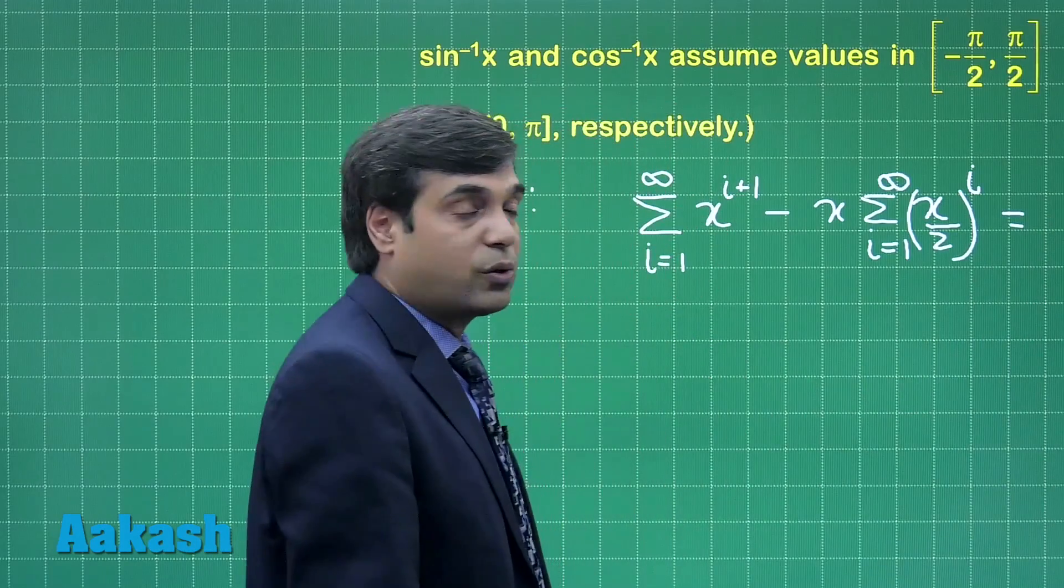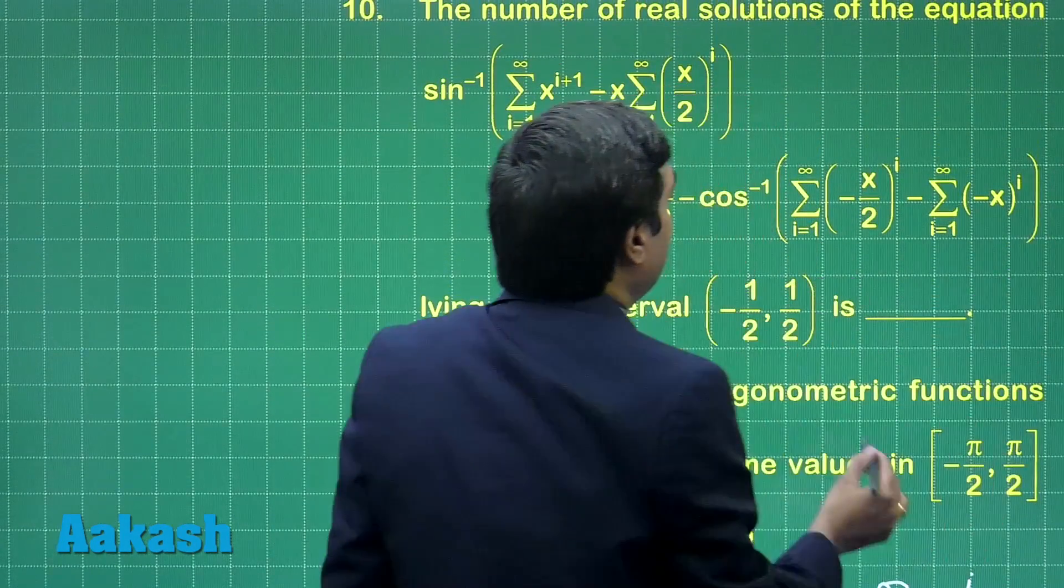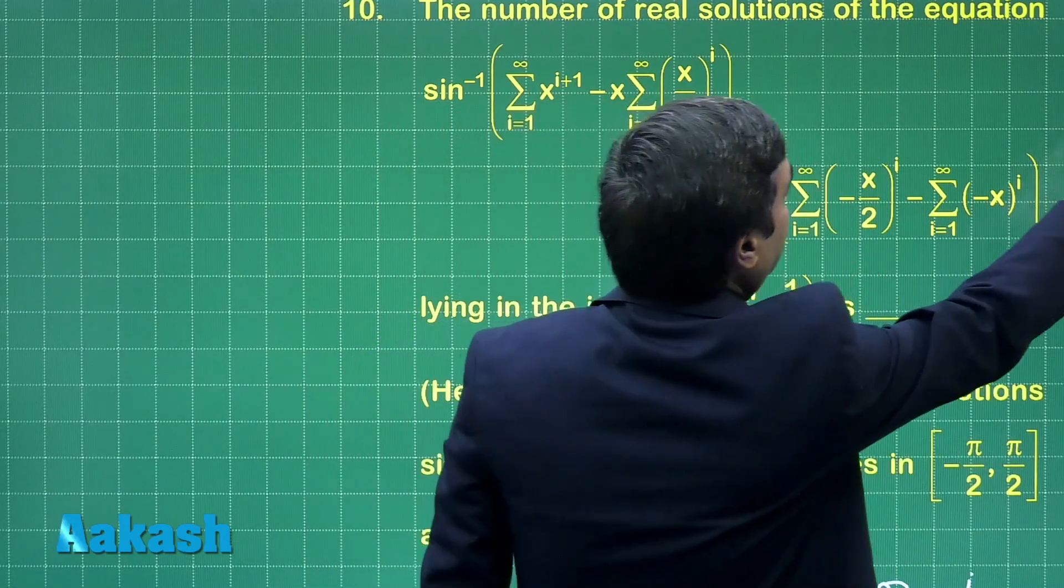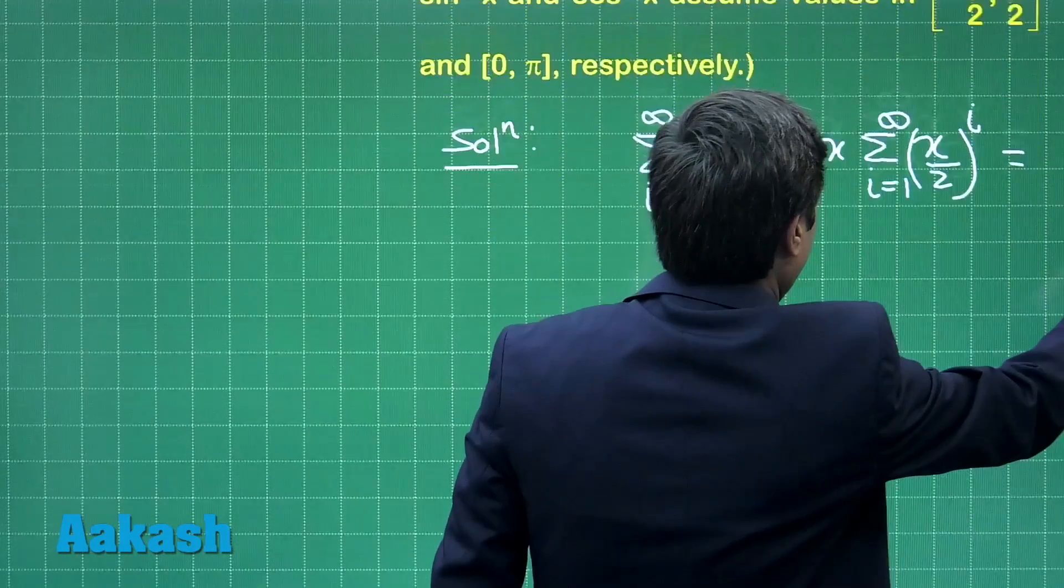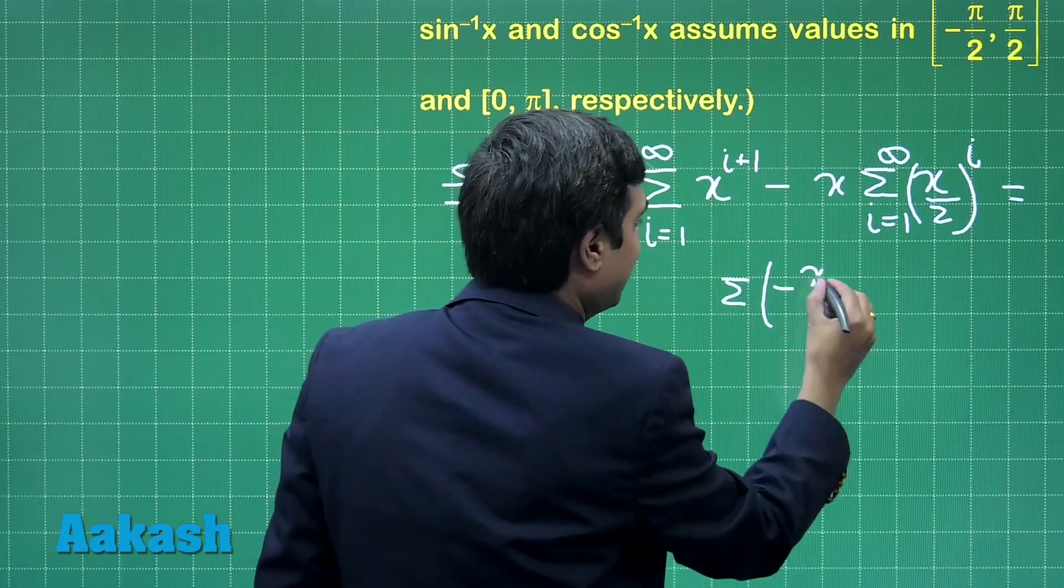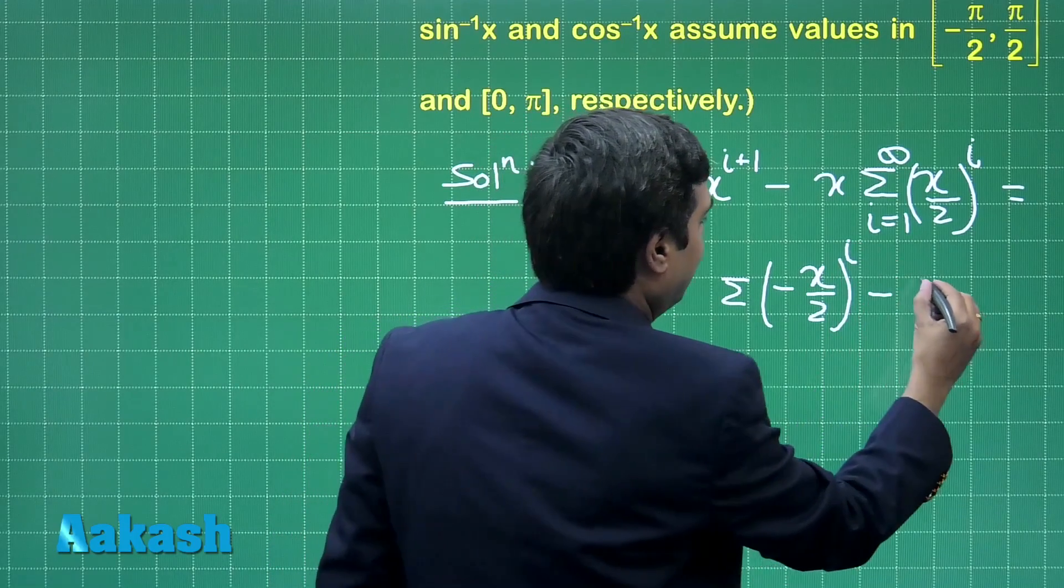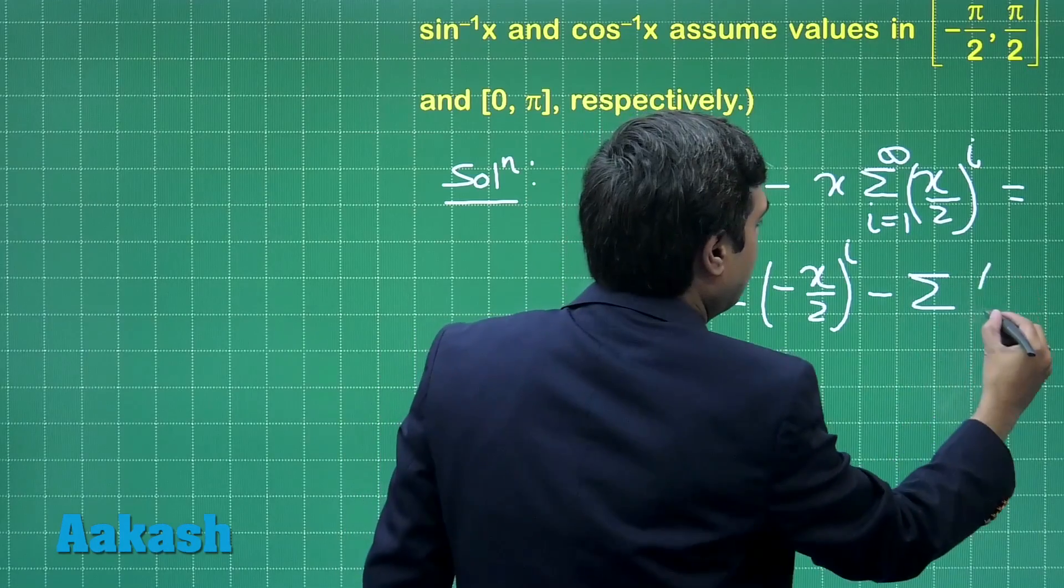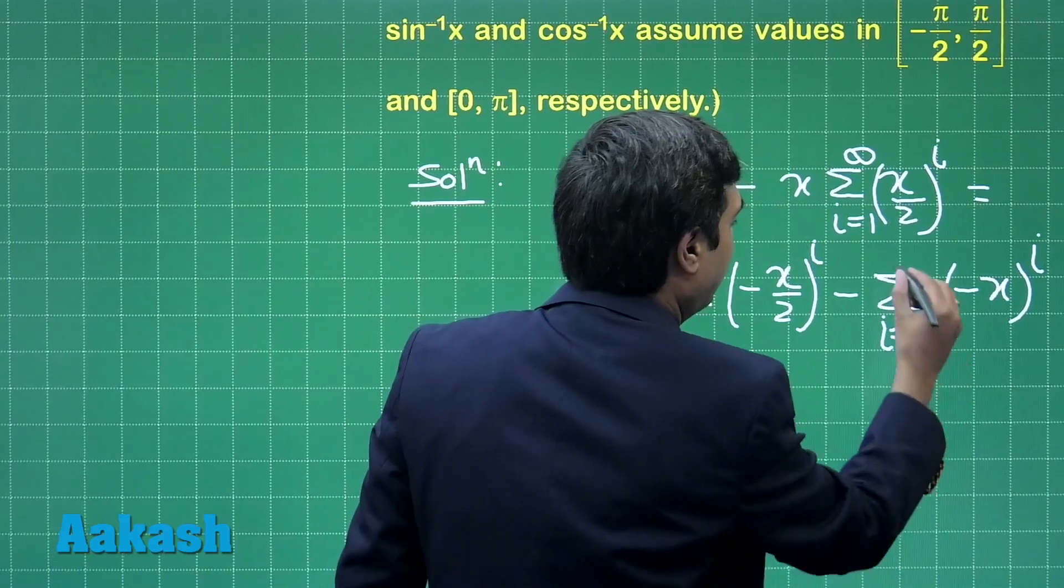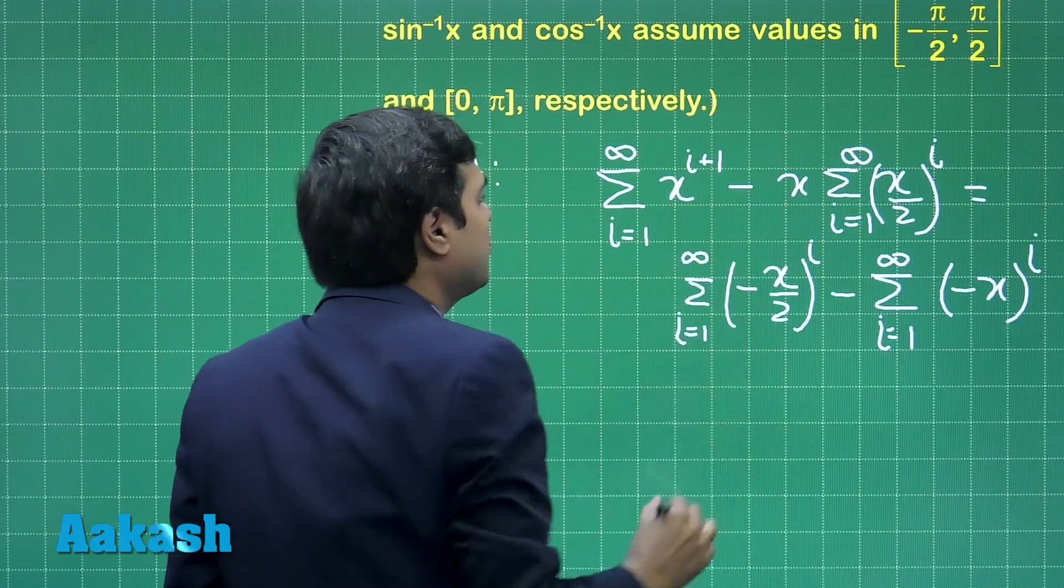The term after cos inverse which is summation over minus x by 2 to the power i, minus summation minus x to the power i where i is from 1 to infinity in each case.